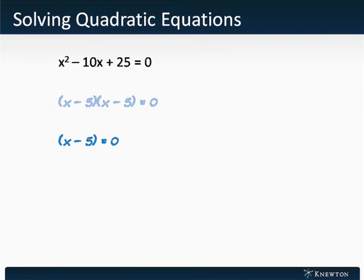So in this case, since they're the same, we know that the only case is that x minus 5 equals 0. So we can solve that x equals 5. And this quadratic equation has but one solution.